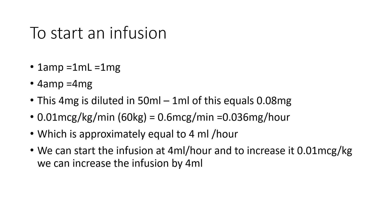To set up an Adrenaline infusion: take 4 ampules of Adrenaline (4 mg / 4 ml) and dilute with 46 ml of normal saline to make a 50 ml solution. The infusion can be started through a peripheral line initially, but must be changed to a central line promptly, as peripheral infusion of vasopressors is not suitable long-term. A more dilute infusion is used peripherally; a more concentrated infusion can be used once on a central line.